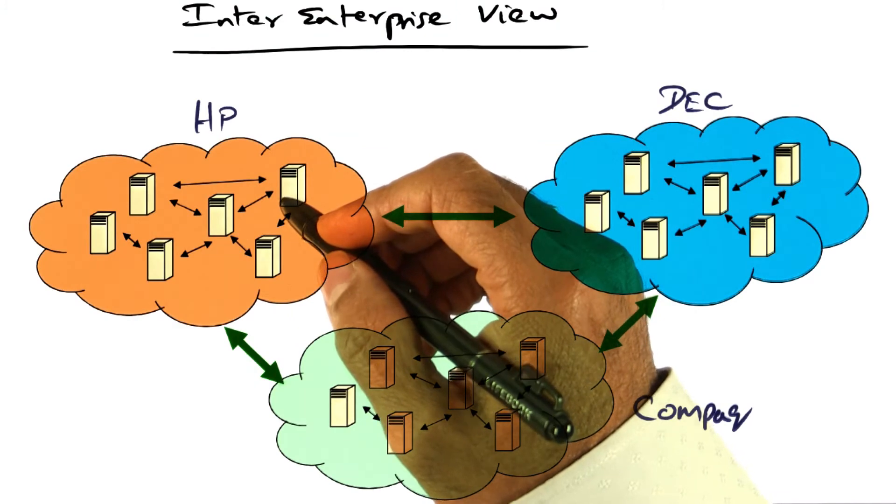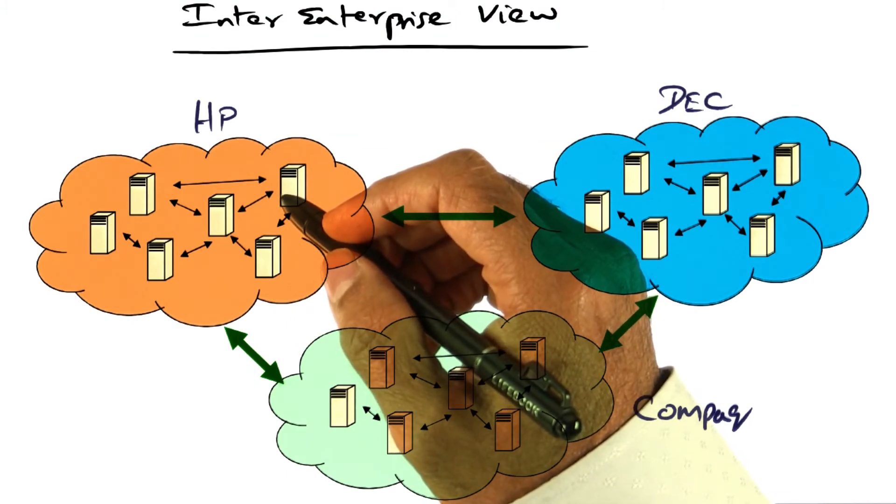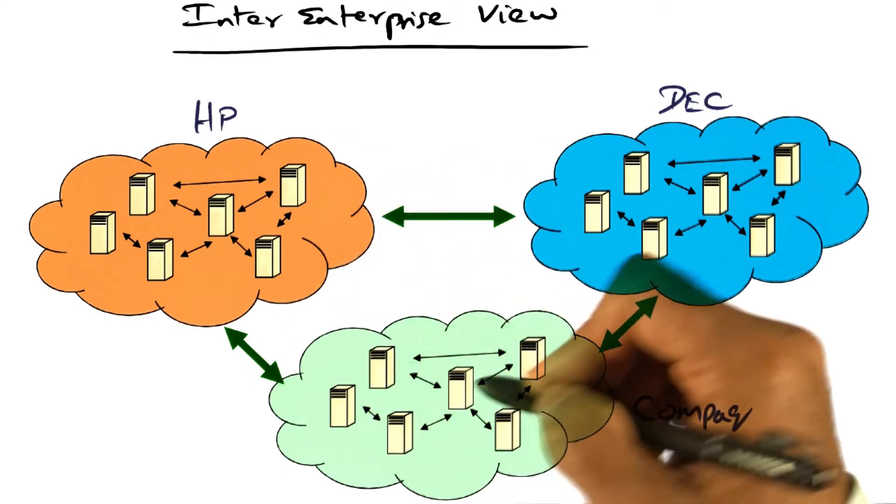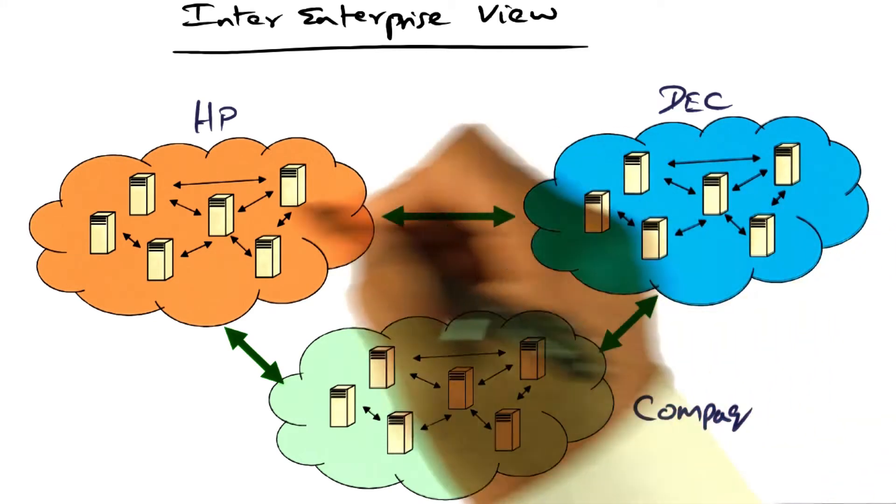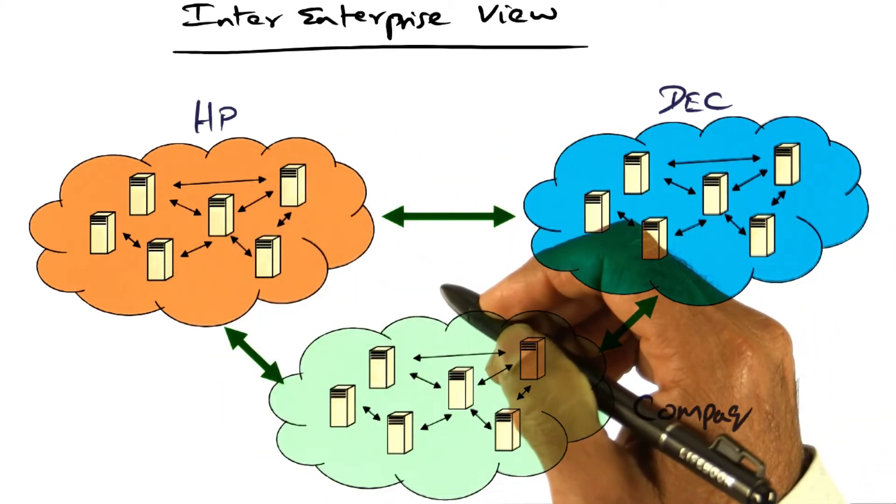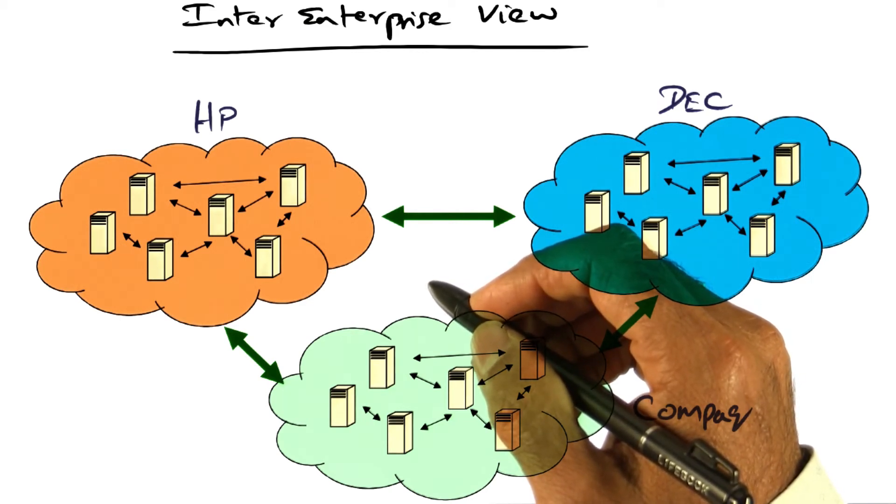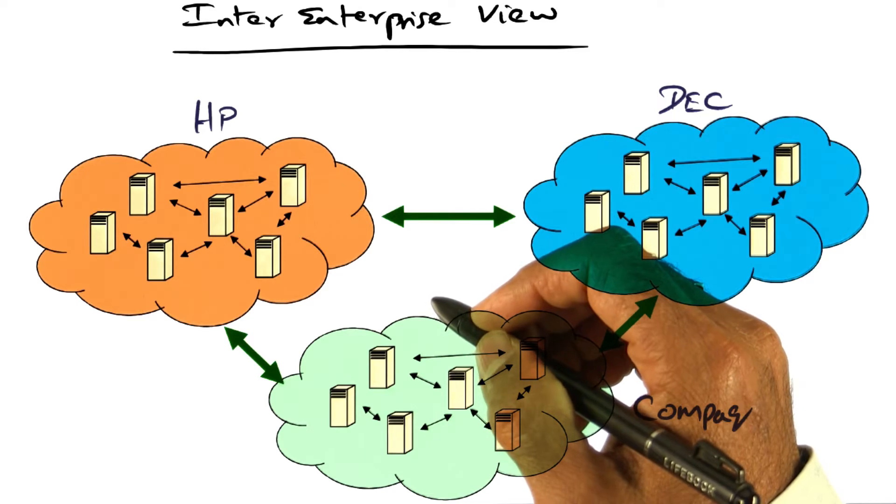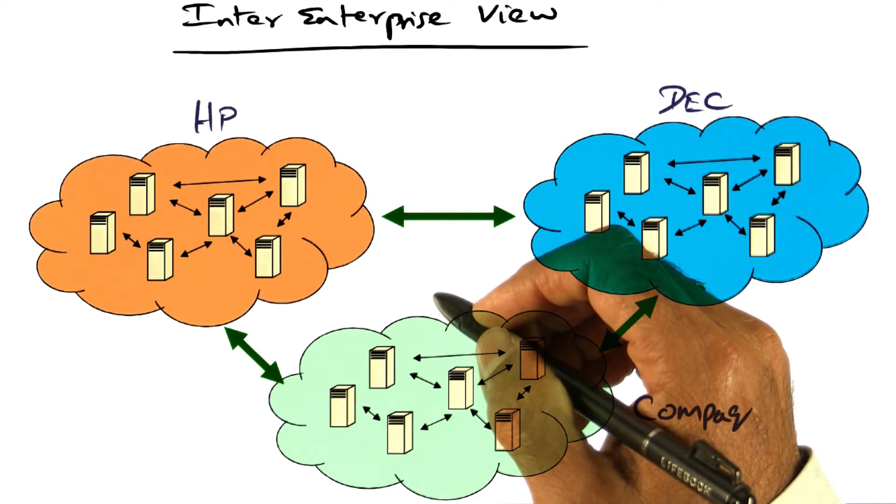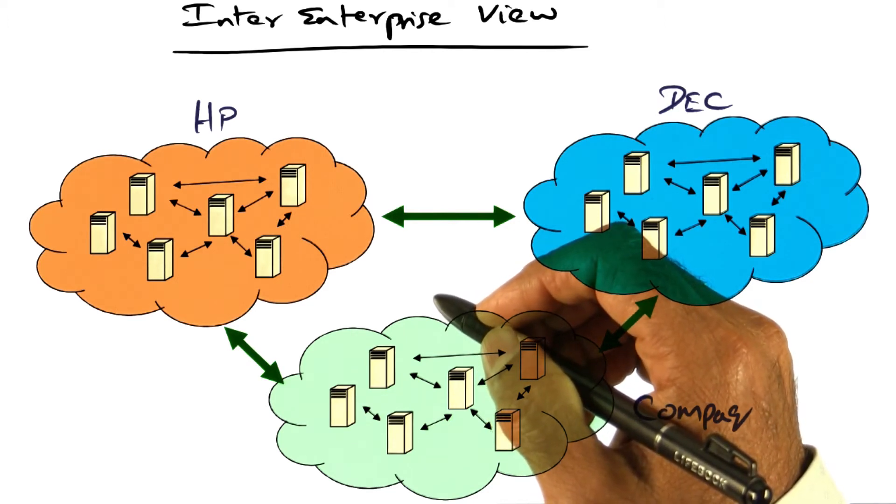Things get a lot more complicated in this day and age because when we access an enterprise, in fact, the enterprises may talk to one another. And this is what is usually called a supply chain model, where the service that you are requesting may not be serviced by a single entity, but may actually involve the entity that you're contacting, contacting other entities in order to put together a solution for your particular request.